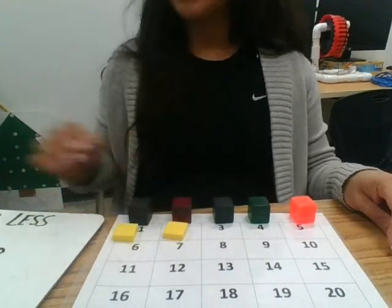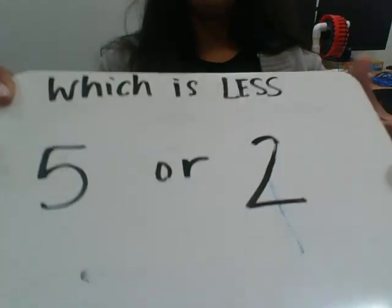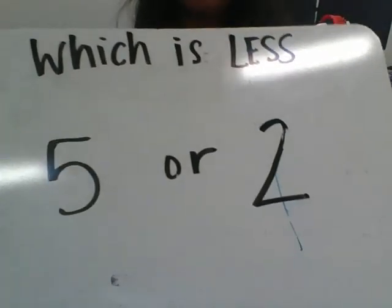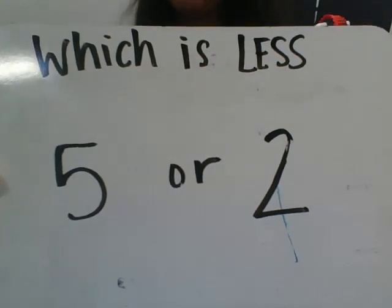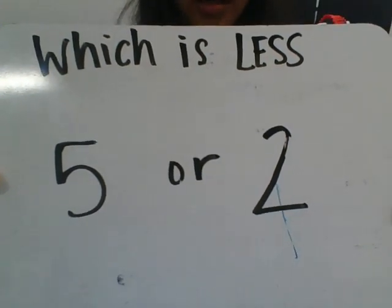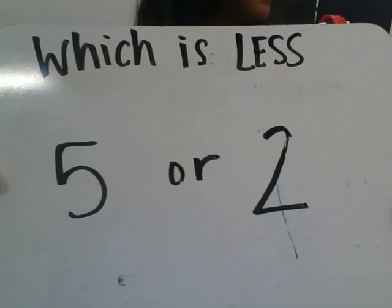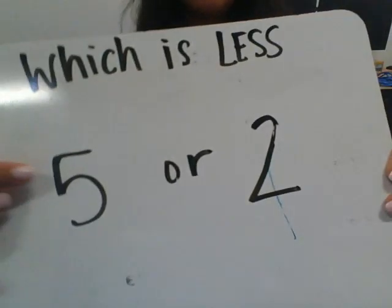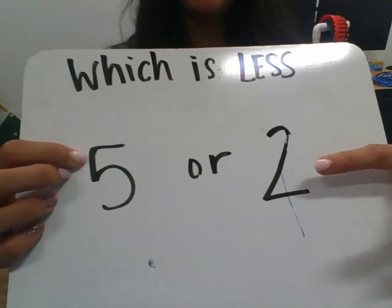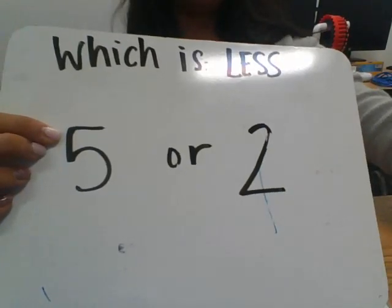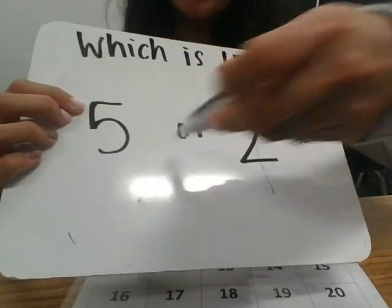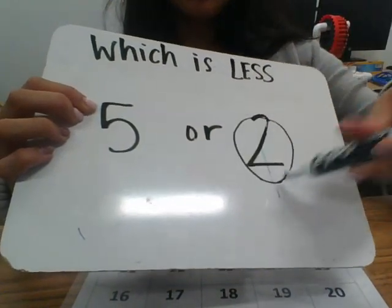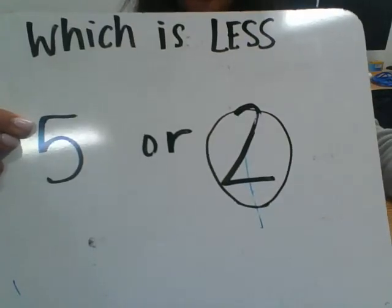So which one is less — 5 or 2? Go ahead and point at the screen. You can also use your response cards to identify which one is less. If you said 2 is less, then you're correct. The smaller number is 2.